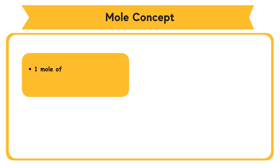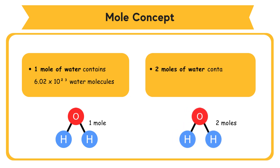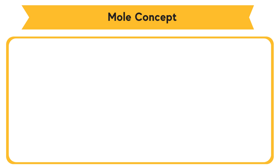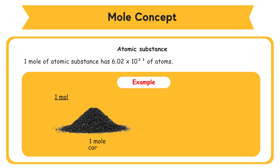1 mole of water contains 6.02 × 10²³ water molecules. 2 moles of water contains 2 × 6.02 × 10²³ water molecules. The number of particles depends on the type of substance. Atomic substance consists of atoms. 1 mole of atomic substance has 6.02 × 10²³ atoms. For example, 1 mole of carbon contains 6.02 × 10²³ carbon atoms.